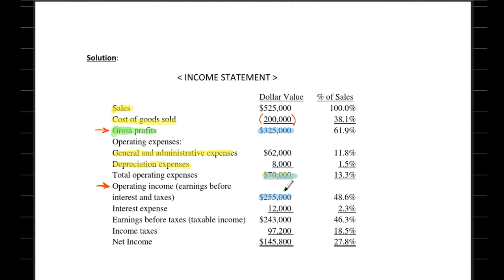If you remember, interest expenses were in the amount of $12,000. So once this is deducted from operating income, we come across the next term, which is earnings before taxes, or you can call it taxable income. In our case, our taxable income is $243,000.